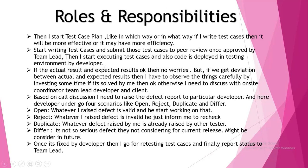Code is deployed in the testing environment by the developer. If the actual result and expected result match, then no worries. But if we get a deviation between actual and expected results, I have to observe things carefully by investing some time. If it is solved by me, okay, otherwise I need to discuss with the on-site coordinator, team lead, developer, and client. Based on call discussion, I raise a defect report to the particular developer. The developer undergoes four scenarios: open, reject, duplicate, and deferred. Open means the defect I raised is valid and the developer starts working on it. Reject means the defect report is invalid and he informs me to recheck. Duplicate means the defect raised by me was already raised by another tester. Deferred means it is not a serious defect, so they may not consider it in the current release - maybe in the future.